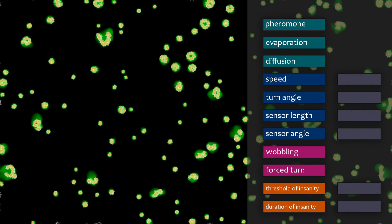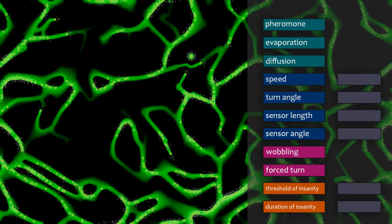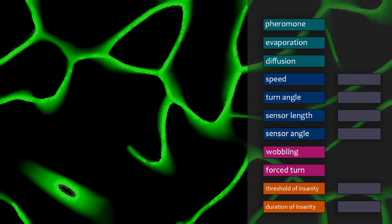Some parameters are the same for all the agents. Other parameters have a range, and for each agent, a value from this range is randomly selected.